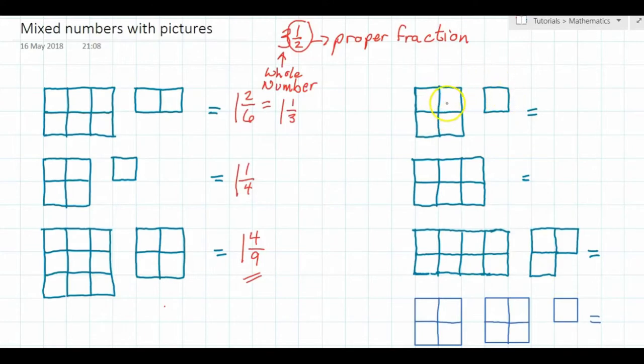For this one you should have written 1 and 1/4 because it's exactly the same as this one over here. And for this one you could have just written 1 because there are 6 squares and 6 spaces, so it would be 6/6, which equals 1.